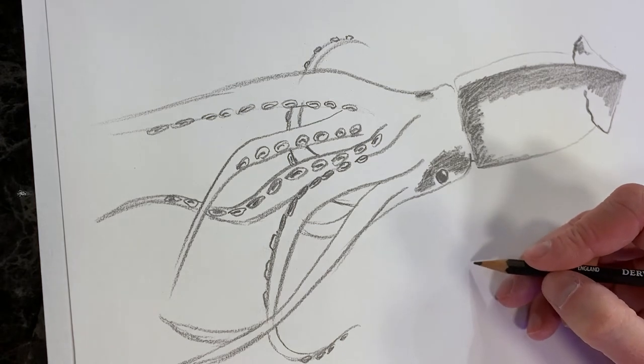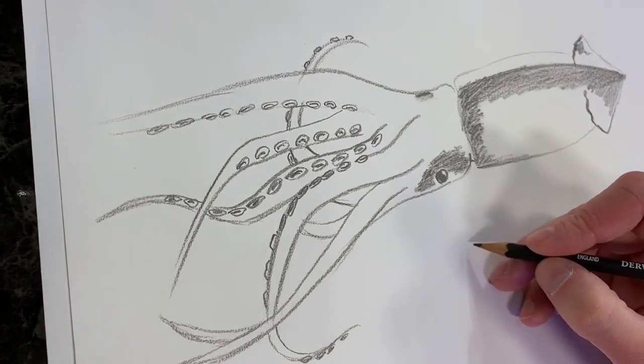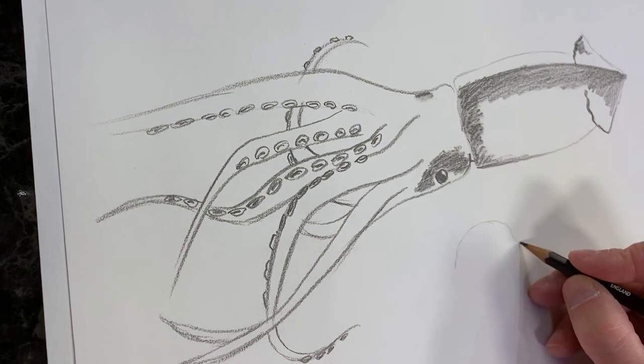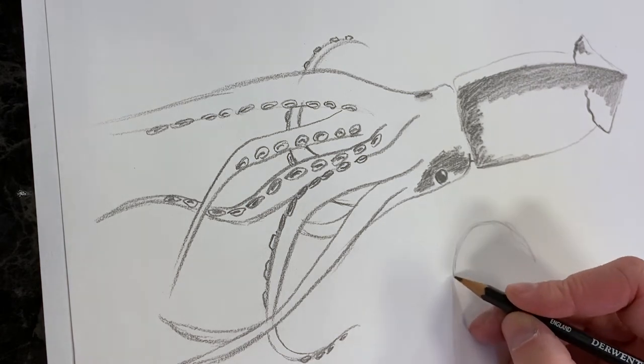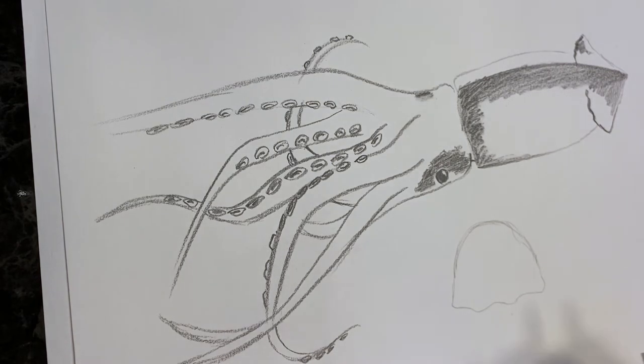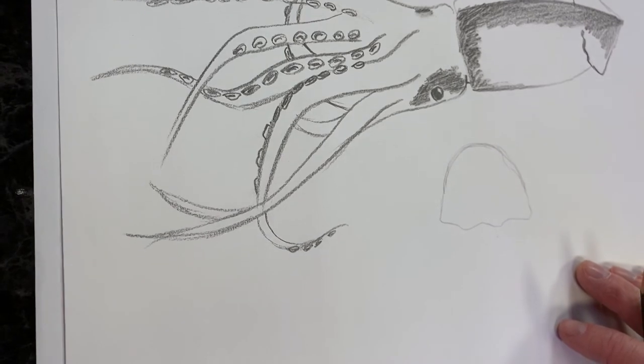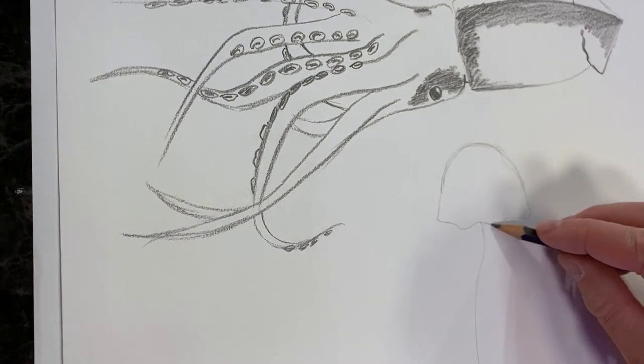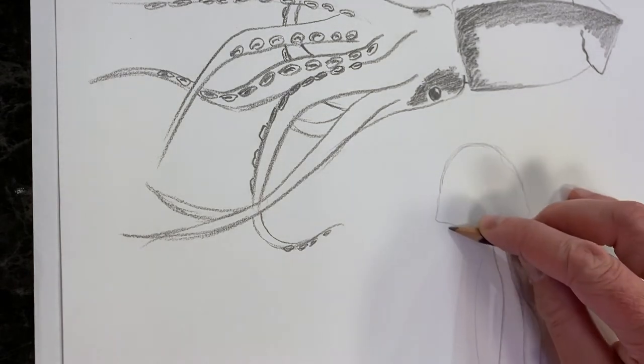So for a jellyfish you're going to start with basically a rainbow shape and then make it sort of wavy here. And then for the tentacles we're just going to keep kicking the pencil out in wavy lines.